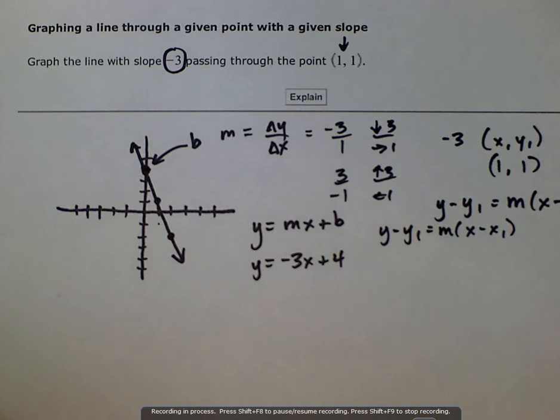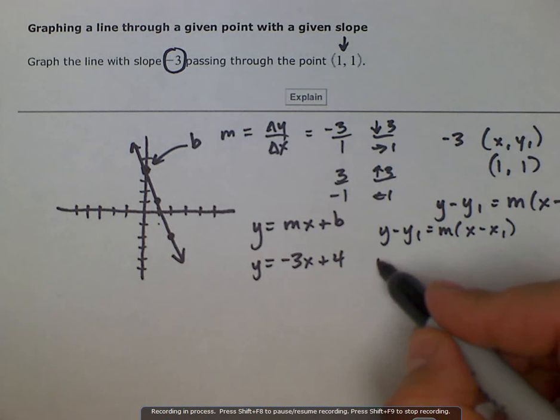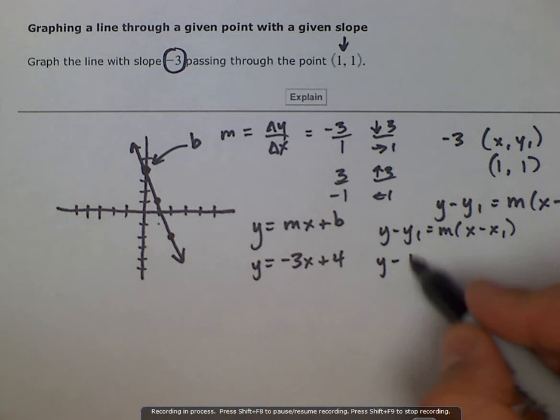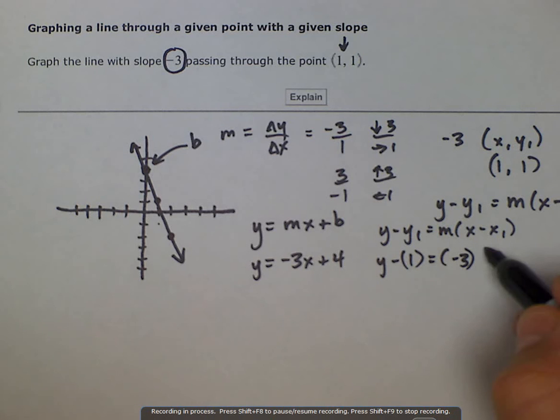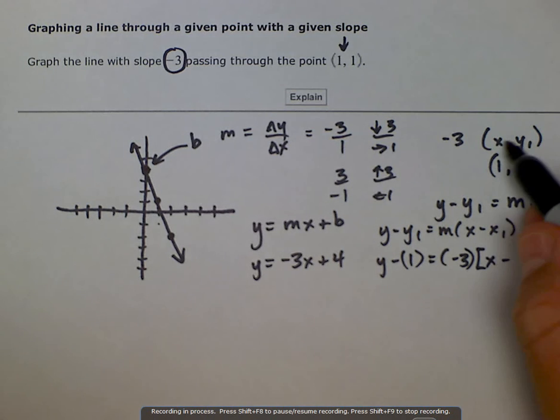So you just take these numbers and plug them in where they need to go. So y minus y1, which is 1, I'll put parentheses around it, equals, in parentheses, our slope negative 3. I'm going to make this brackets, x minus our x1, which is 1.